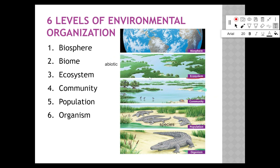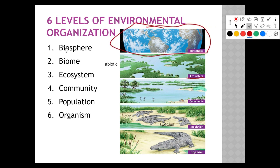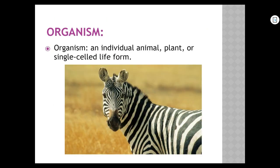An ecosystem is a bunch of communities of living things together, but it also includes abiotic factors — the non-living things. Water is not alive, so it would be an abiotic factor. Dirt, rocks, and the environment — all non-living things are abiotic factors. So an ecosystem is the abiotic and biotic factors living together in an area. A biome is a larger area, including deserts, rainforests, and tundra.